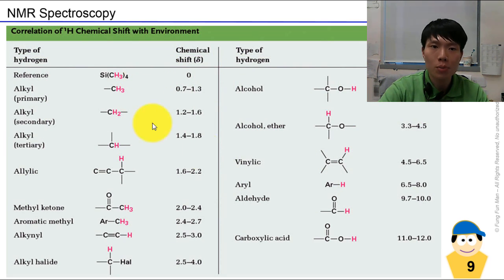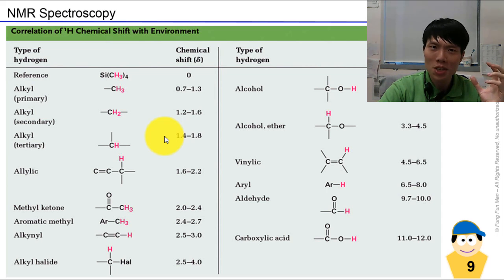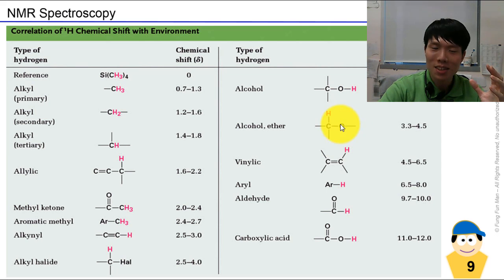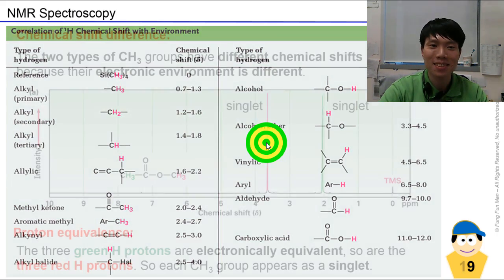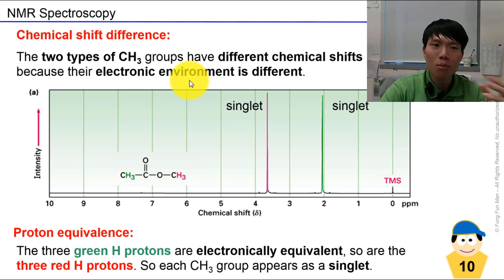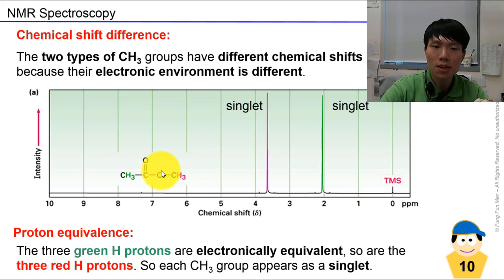In the correlation table for NMR, do not memorize it — just refer to it when necessary. But you should know from what you've learned: if I have an oxygen closer to the hydrogen compared with one that doesn't have oxygen close to it, the one with oxygen nearby should have a higher chemical shift. Now the chemical shift differences — in an ester, in this case a methyl ester, which smells quite good.